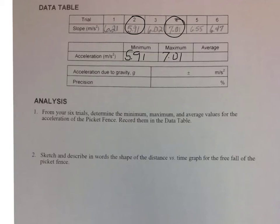The average is a bit of a calculation, so I'm going to write my numbers out. I have 6.21 plus 5.91 plus 6.02 plus 7.01 plus 6.55 plus 6.47.